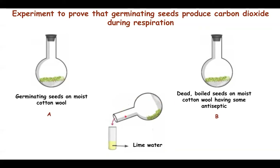You might wonder why carbon dioxide, which is a colorless and almost odorless gas, passes downward and enters the test tube containing lime water. Carbon dioxide is a gas which is considerably heavy — it is 2.5 times heavier than air. Due to this reason, it flows down and enters the test tube containing lime water. So this experiment proves that germinating seeds produce carbon dioxide during respiration.